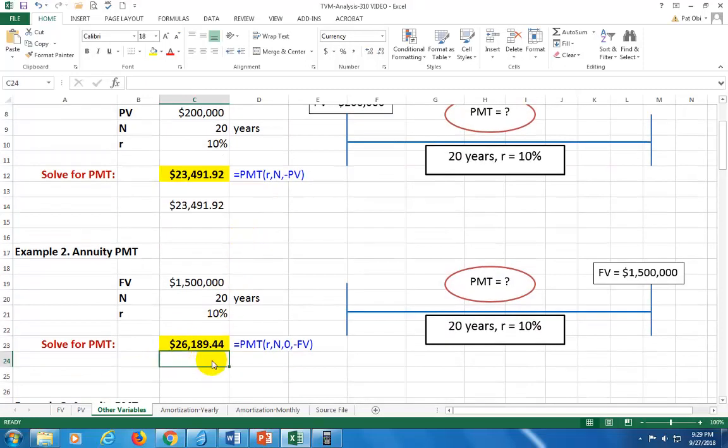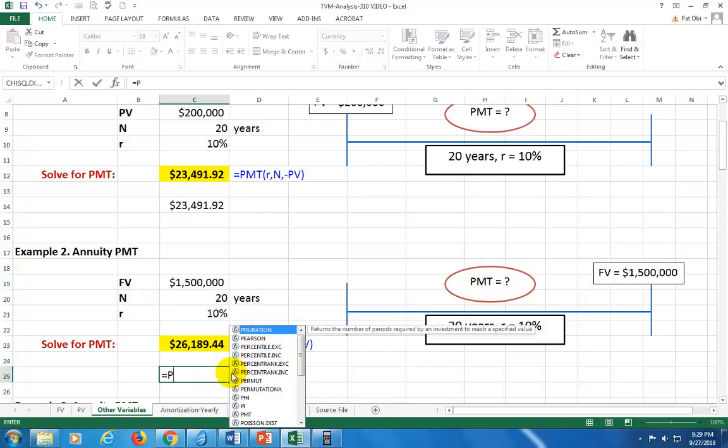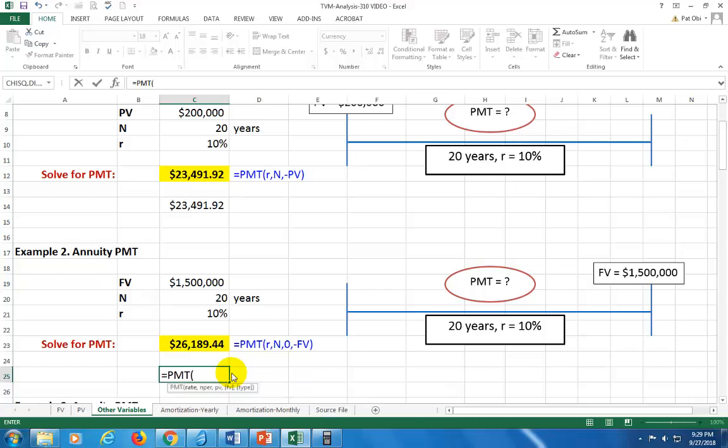How about the second one? In the second one, you have a target of $1.5 million in the future and what's going to be the annuity payments. So again, we're going to come out here and hit PMT, open parenthesis.